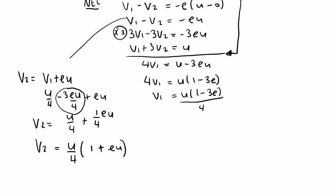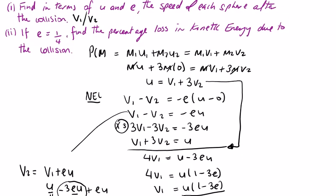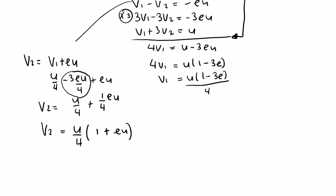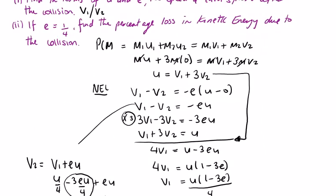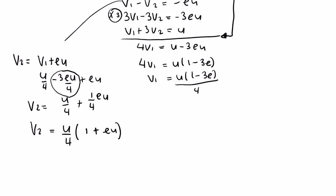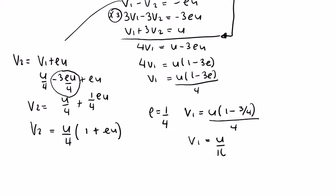In part 2, we're told e = 1/4 and asked for the loss in kinetic energy. If e = 1/4, we can find v1 and v2 in terms of u. v1 = u(1 - 3*(1/4)) / 4 = u*(1/4) / 4 = u/16.